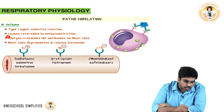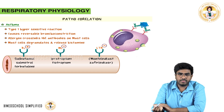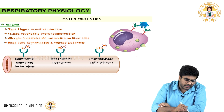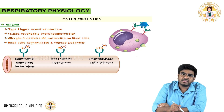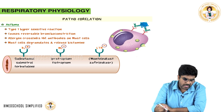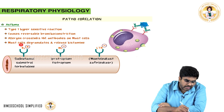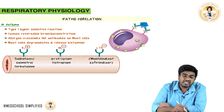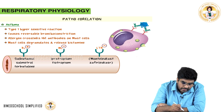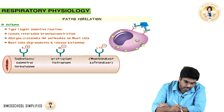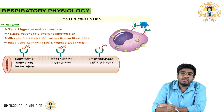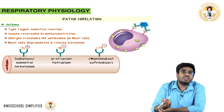The allergen cross-links IgE antibodies on mast cells, activating them. Mast cells degranulate and release histamine, which acts on histamine receptors and causes bronchoconstriction.